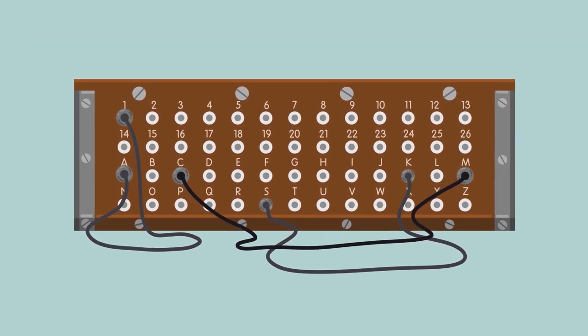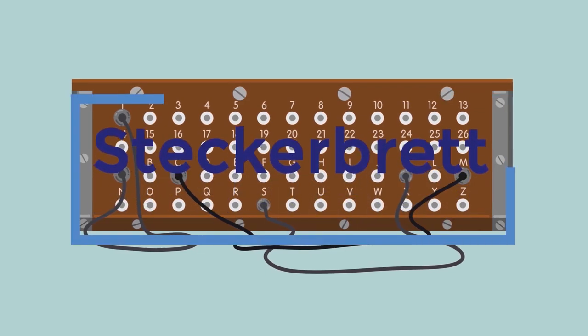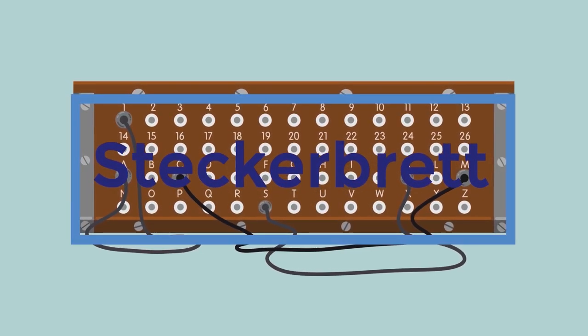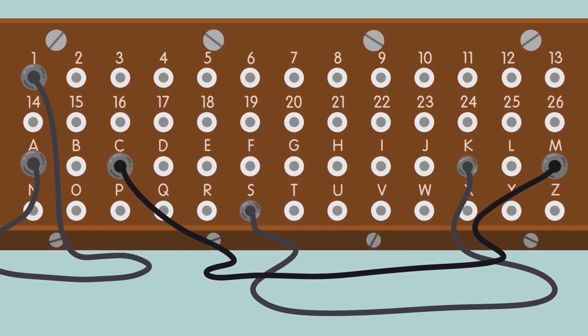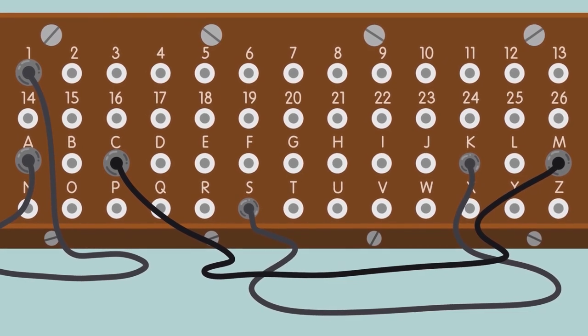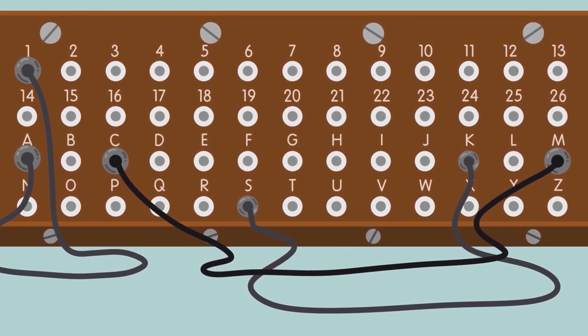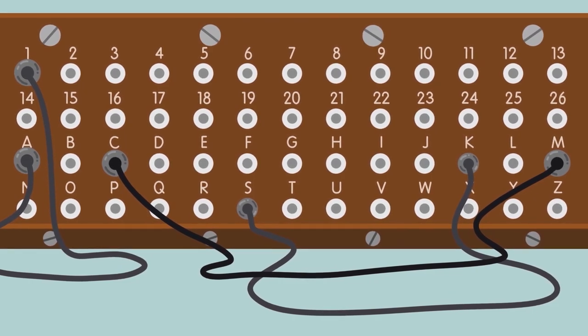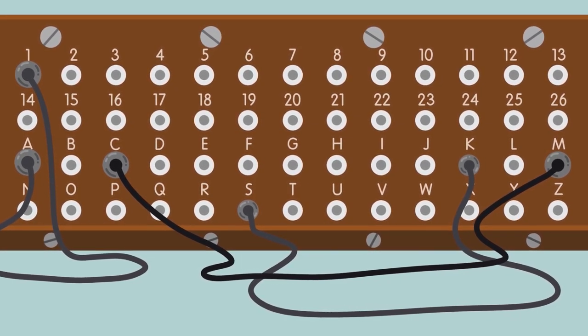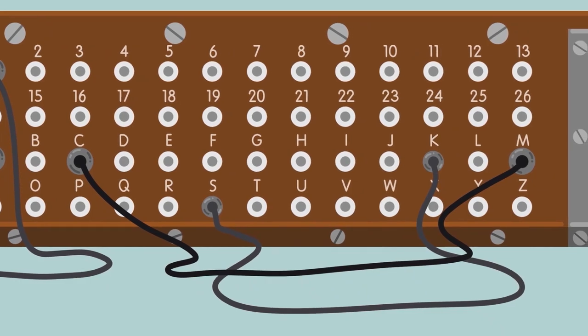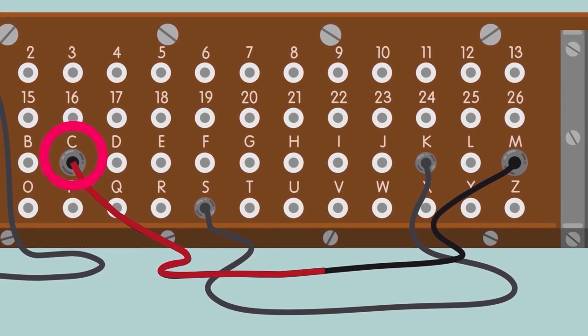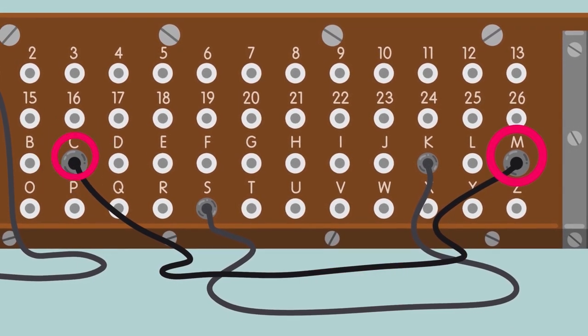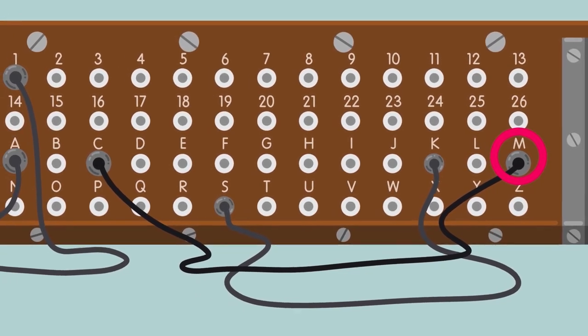In addition, Enigma had a Steckerbrett patch panel. It made encryption an order of magnitude more difficult, changing the connection between the keys even before the rotors started working. On the front panel, there are paired holes responsible for letters. The cables connected them in pairs. For example, the operator pressed the C key. The signal was sent to the M, and only then was transferred to the rotors.